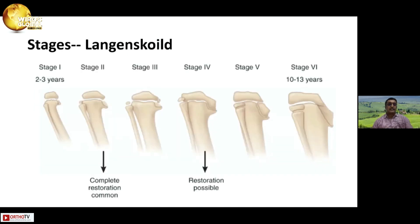Blount's disease goes by various stages as described by Langenskiöld. Stages 1 to 2: complete restoration is common. Stages 3 and 4: restoration is possible, with some amount of epiphyseal depression and growth plate involvement, but the medial growth plate is still intact. Stages 5 and 6: most of the time the medial growth plate is fused, and there is quite a lot of epiphyseal and articular depression.